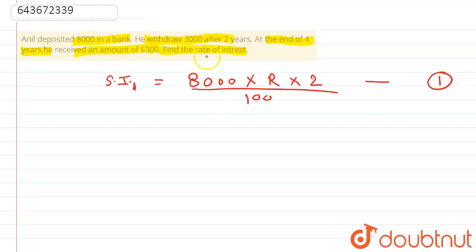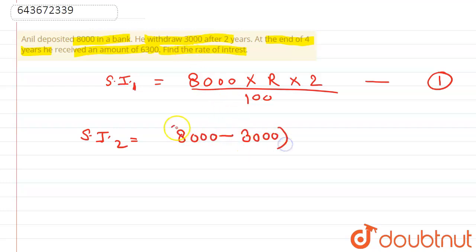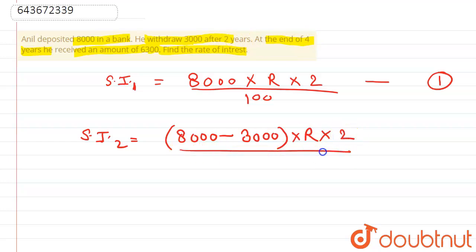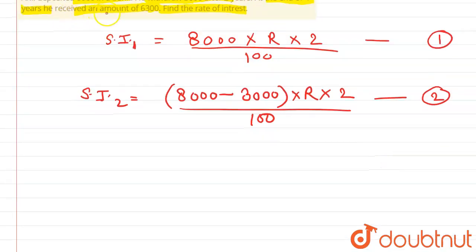Now, simple interest after withdrawing 3000: the money left is 8000 minus 3000, which is 5000. So SI2 equals 5000 × r × 2 / 100. The rate of interest is the same, that is r. At the end of four years, that means four minus two, that is two years. Suppose this is equation two.